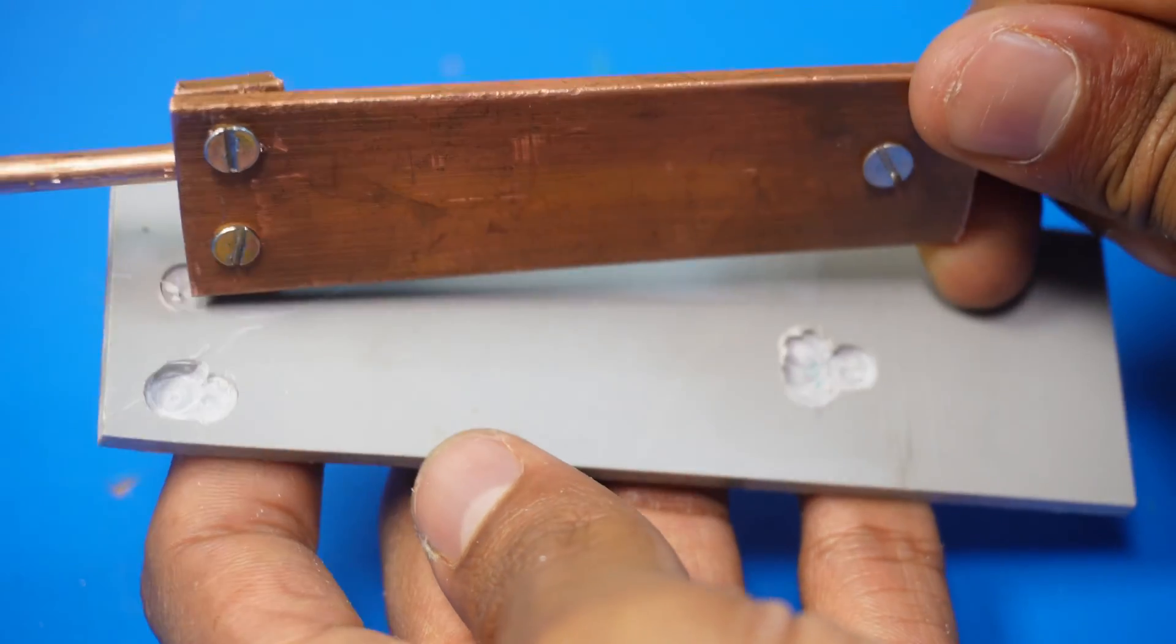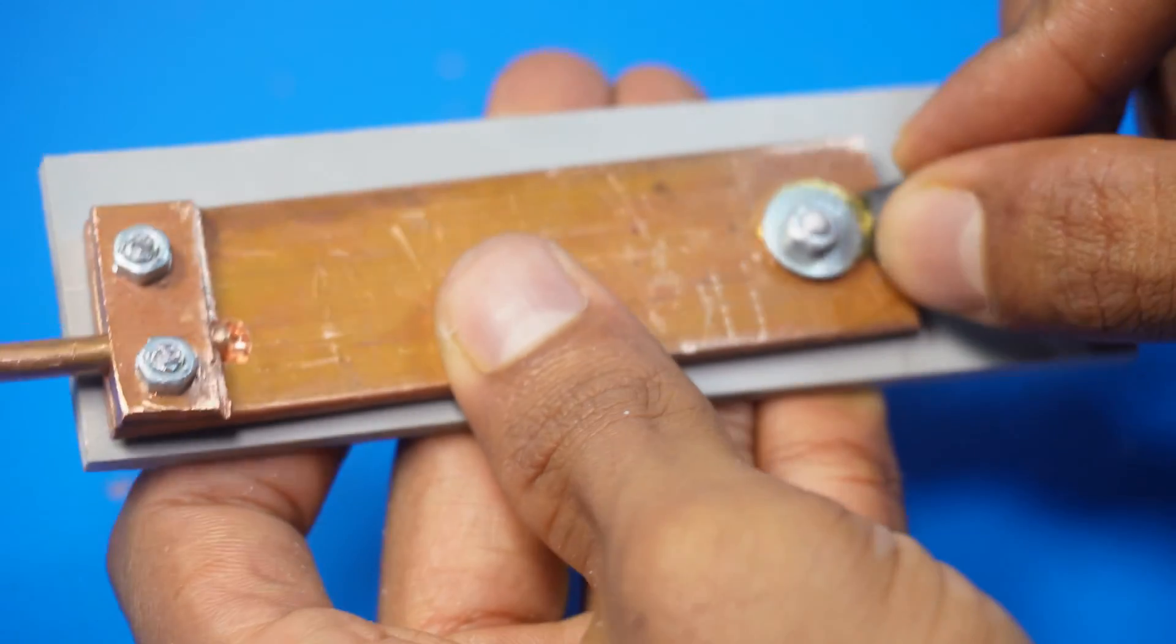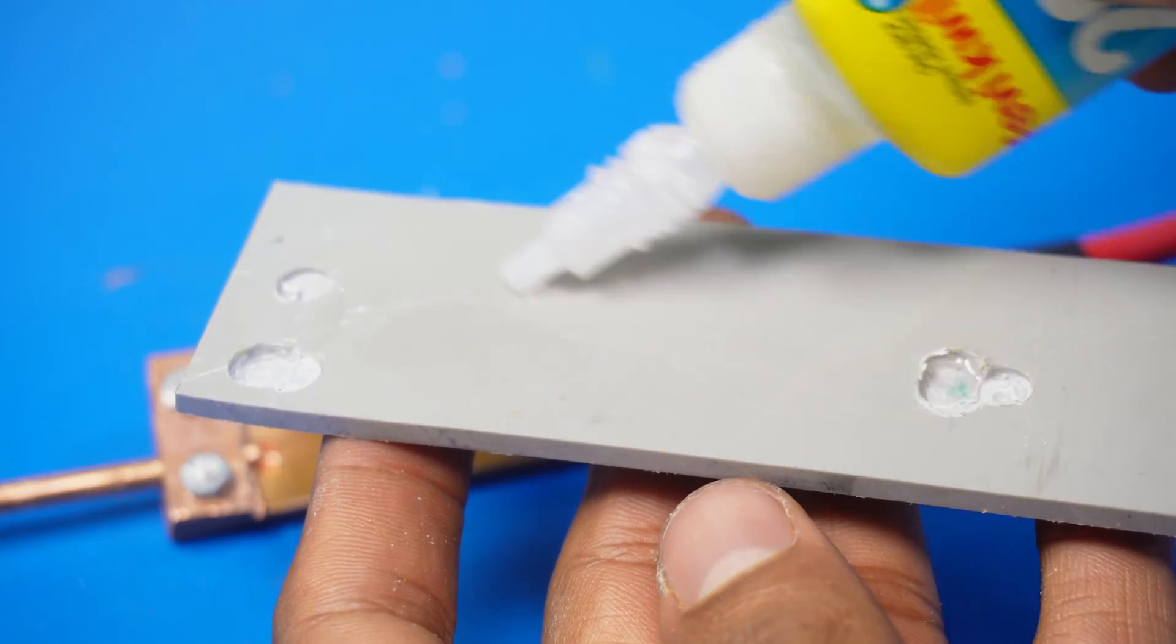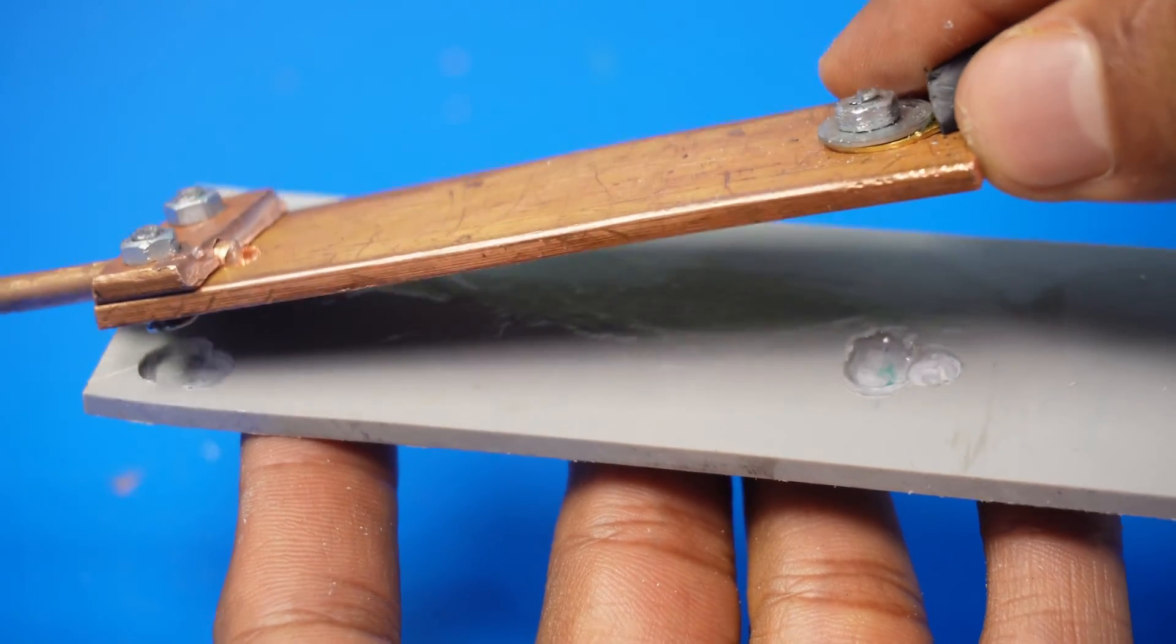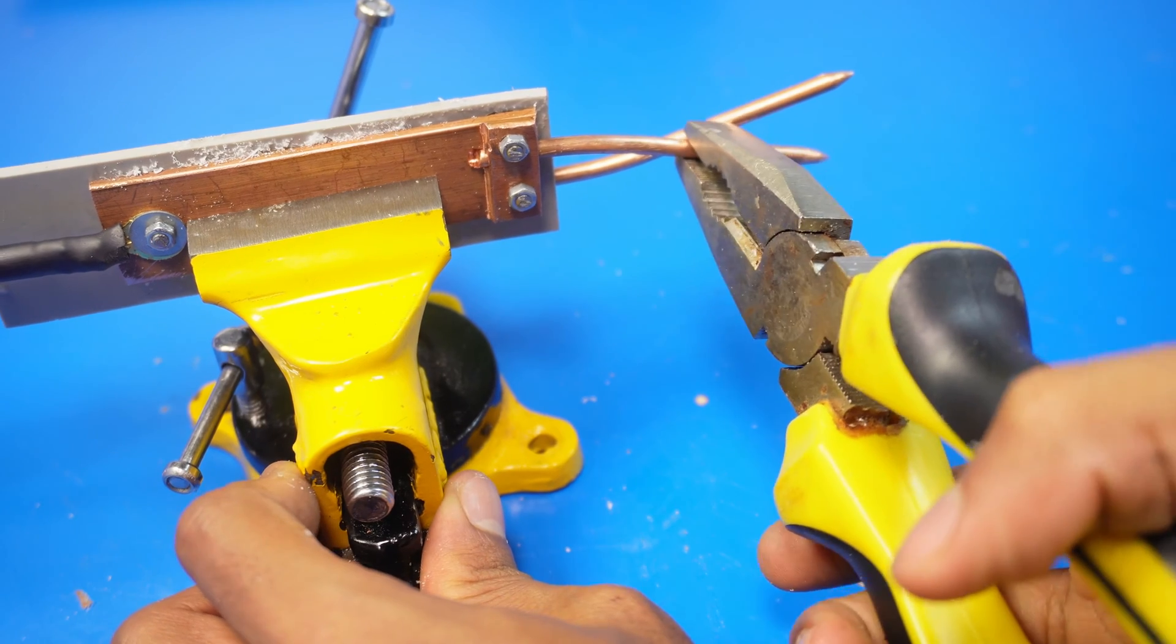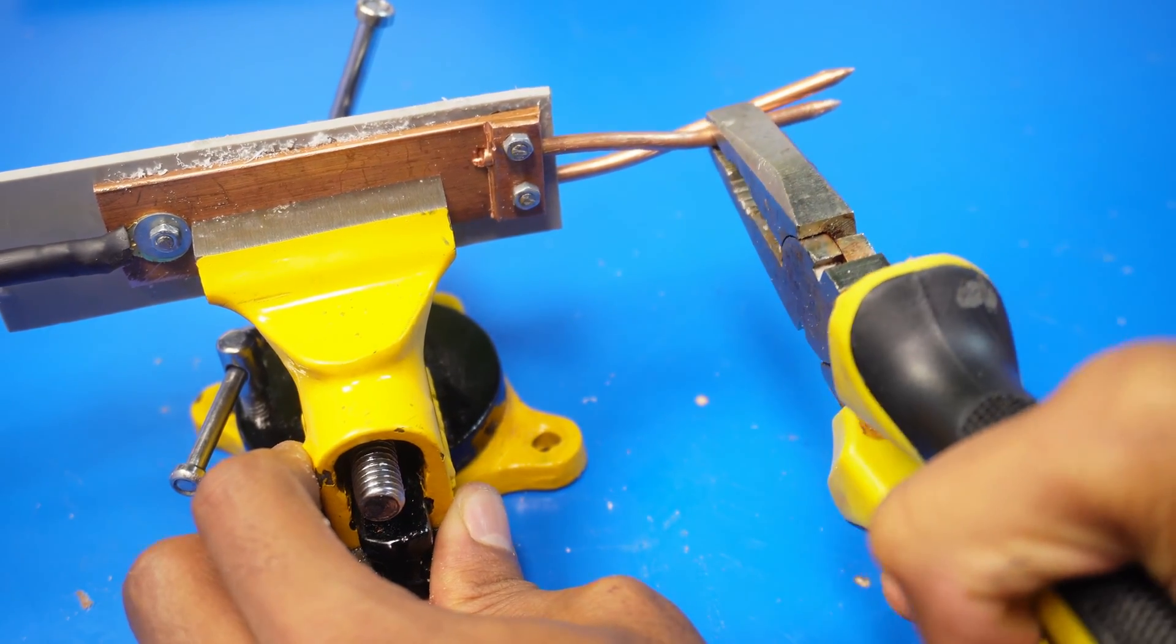I glued the copper strip to the PVC sheet using super glue. The PVC sheet acts as a good insulator between the two copper strips. I brought the copper rods to their final dimensions and added heat shrink tubing to prevent any shorts that could be dangerous.